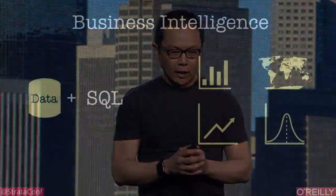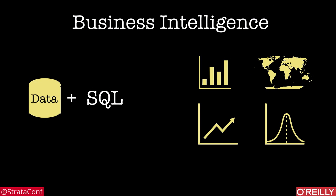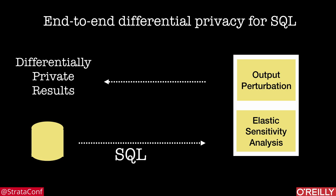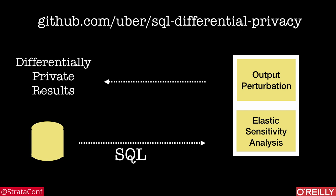First, let's look at BI. For many companies, BI is really a SQL database. You can actually do secure computation on a SQL database — companies use things like hardware enclaves or encryption. I want to highlight a recent collaboration between Uber and UC Berkeley's Rise Lab. Their system allows data analysts to continue to write reports using SQL, and the results of these reports will protect users' privacy. This system is in pilot stage at Uber and is available on GitHub.